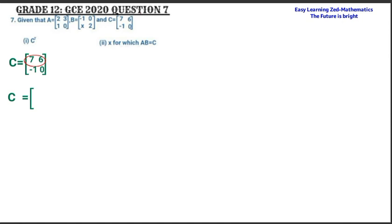So I'm going to pick 7 and 6, which is the first row, and write it as a column — 7 on top and 6 below. Then the second row becomes the second column, which is negative 1 on top and 0 below. That is the transpose of matrix C.